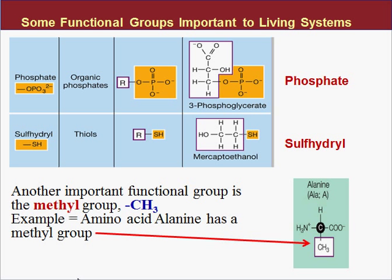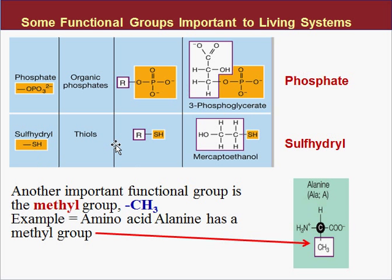The last two are phosphate and sulfhydryl. Phosphate is OPO3, has a negative 2 charge, and you can remember it because it's the only functional group with phosphorus. Sulfhydryl is SH — sulfur and hydrogen — giving a class of molecules called thiols, and it's the only functional group with sulfur. Both give molecules very important properties that we'll explore later in the chapter.